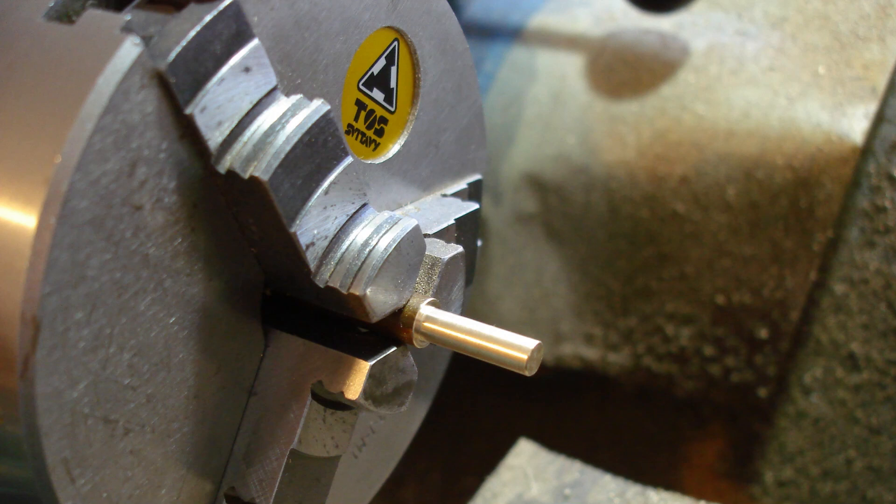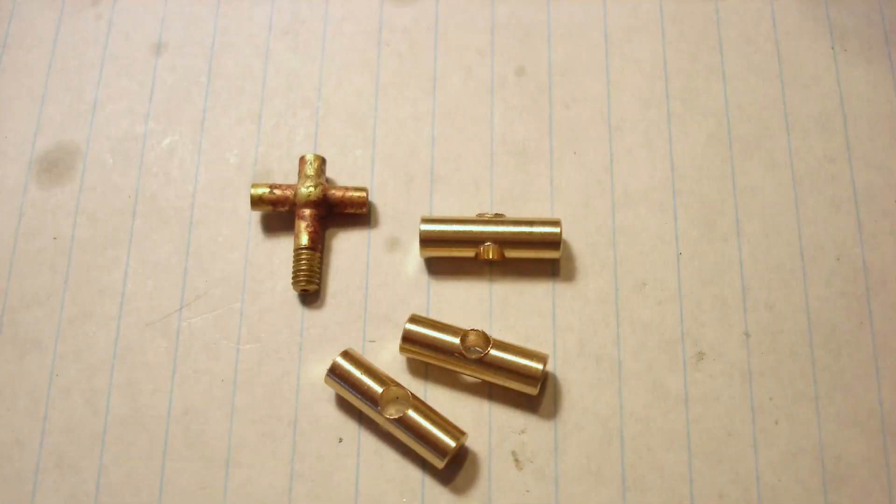Turn to 3/16ths diameter. After turning, they were cross drilled in the vertical slide. 1/8th diameter for the body to pass through.